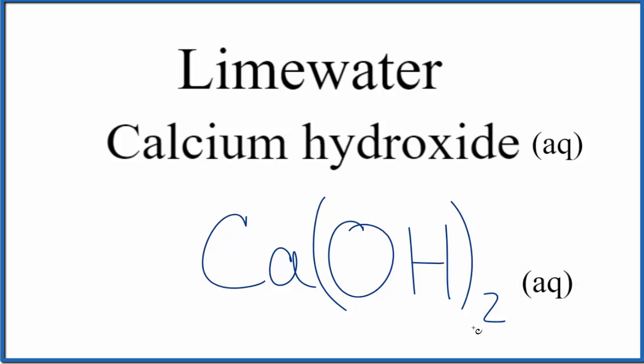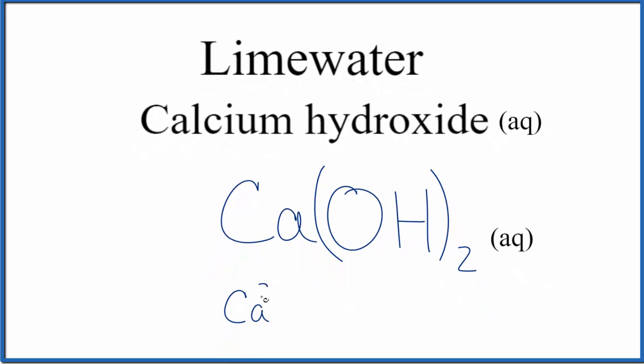What aqueous means here is the calcium hydroxide has dissolved and dissociated, so we get Ca²⁺ and then two hydroxide ions. Because these are both dissolved in water, we have a little (aq) after them.